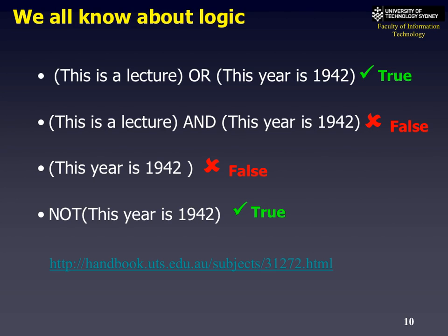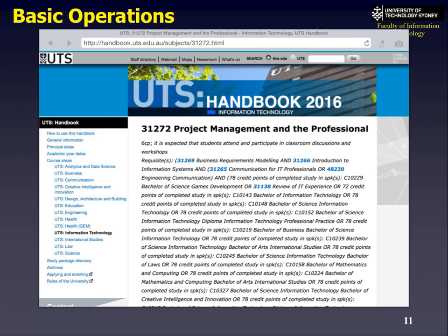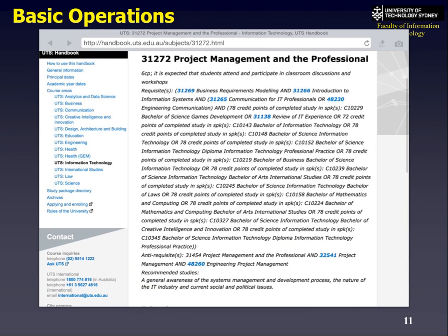Let's look at the UTS Handbook. Take one of your final year subjects: 31272 Project Management Professionals. These are the prerequisites — subjects you need to complete before taking this subject. If you look at the requisites, it's quite complicated: business requirements modeling, introduction to information systems, certain credit points, and a whole bunch of other conditions. There are also anti-requisites — if you've done engineering project management, you can't do project management.